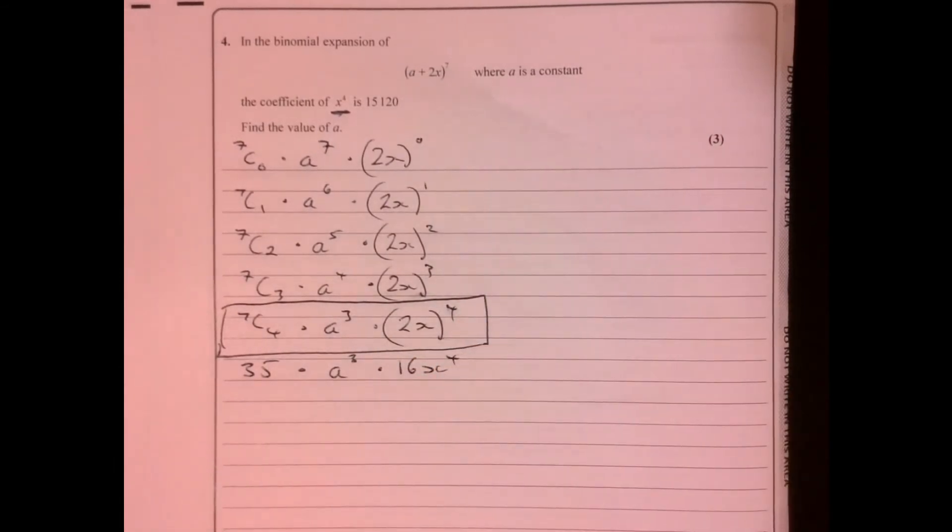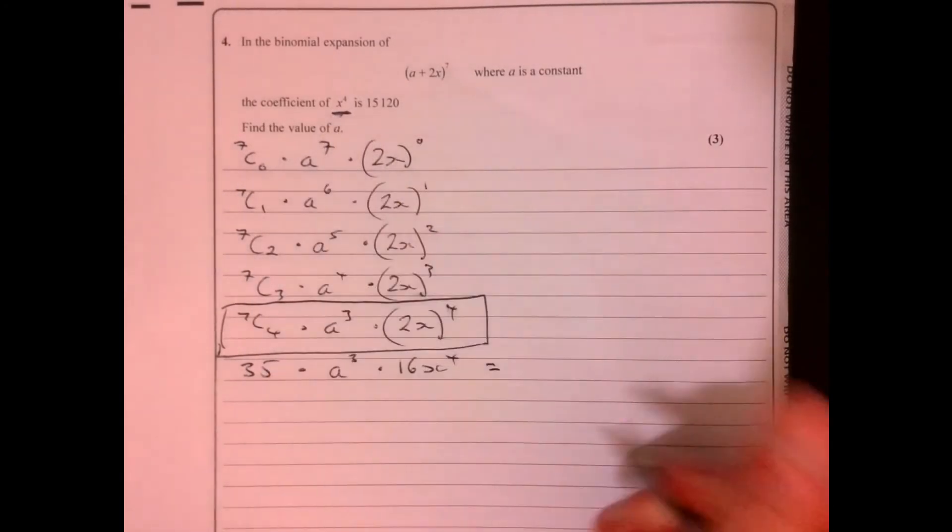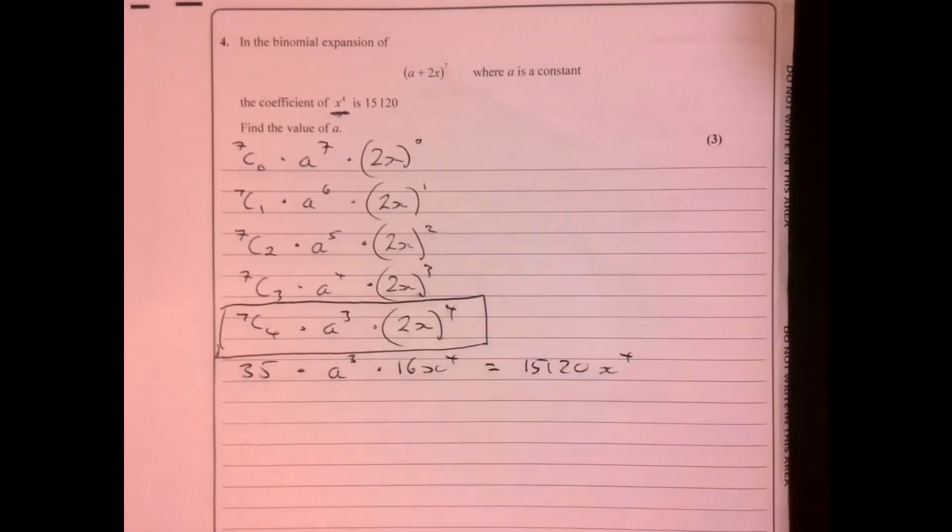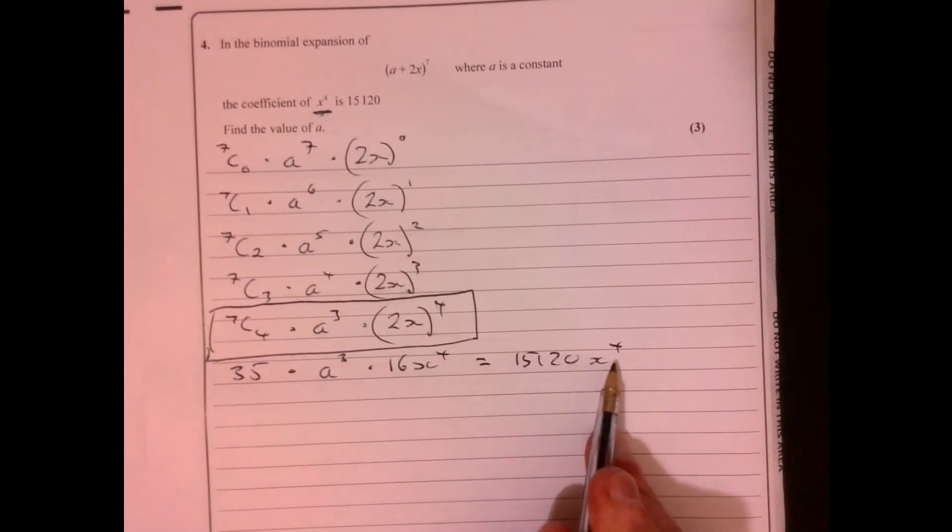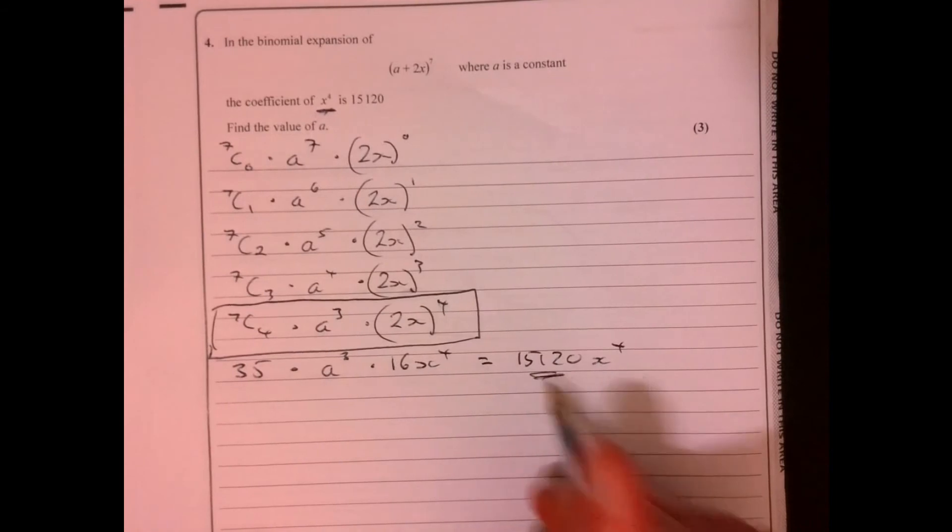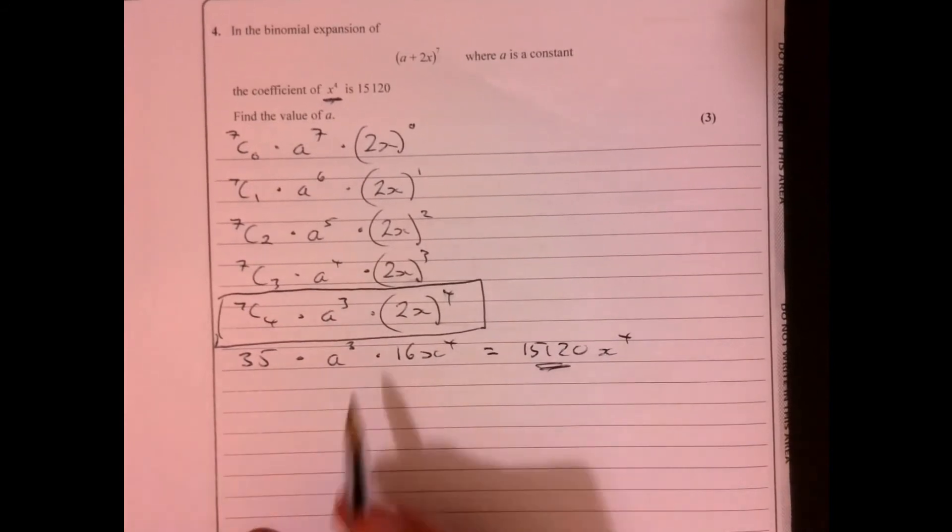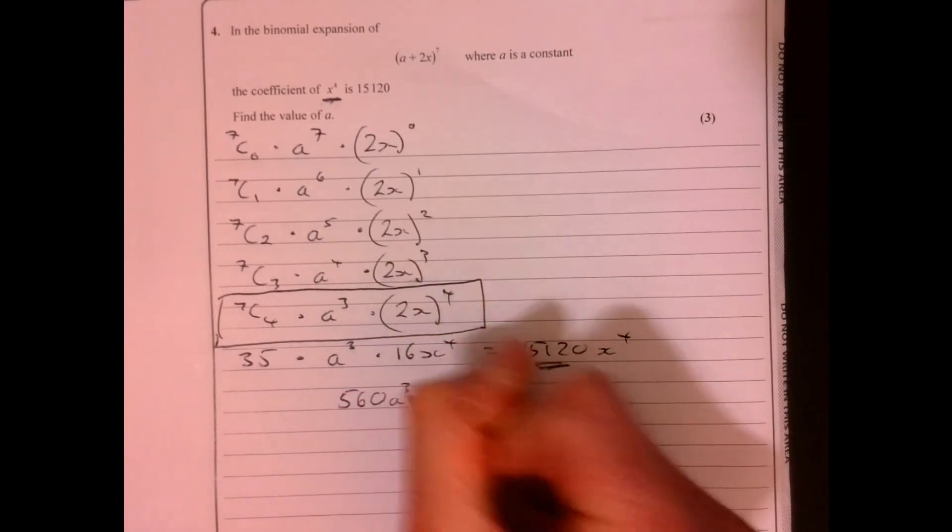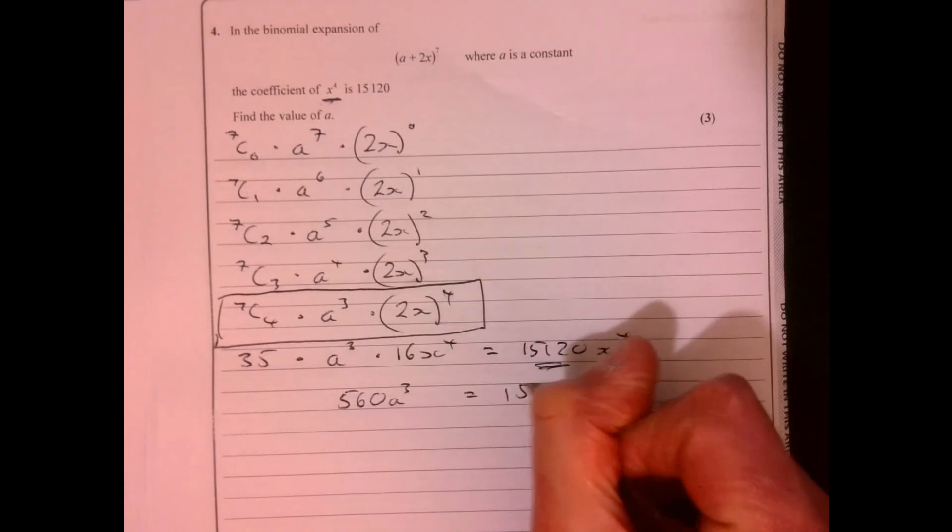Now the question tells me that it's equal to this. It told me the coefficient of x to the four is this figure just here, so now we should be able to work out what the a value is. So multiply those guys together and get 560a to the three. We know that that's equal to 15120.